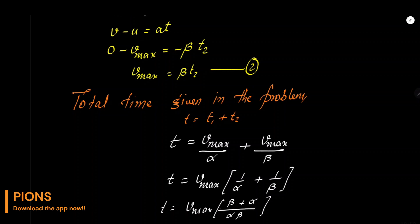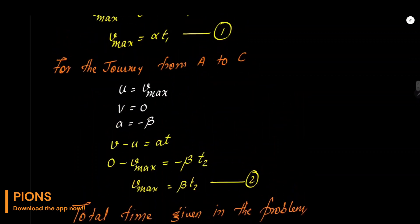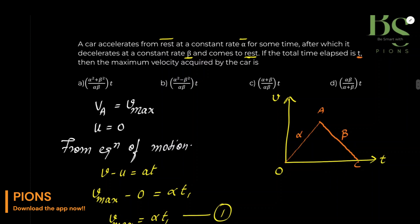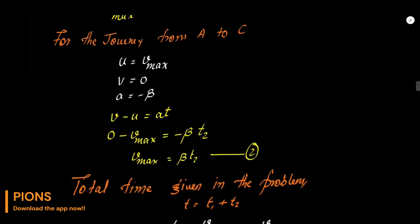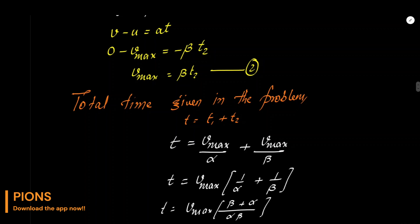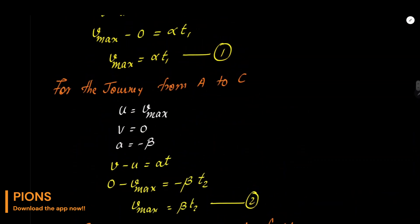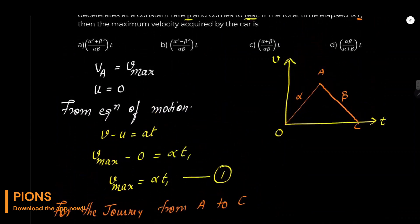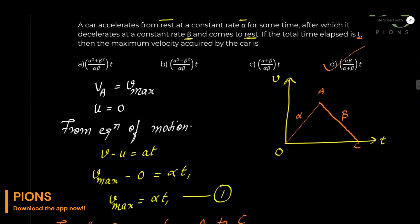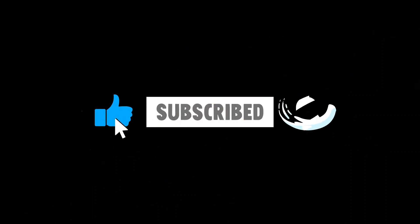अब cross multiply कर लेते हैं। v_max जो कि total maximum velocity है वह आ जाएगा: v_max = T · αβ / (α + β)। यही हमारा answer है — maximum velocity = T·αβ/(α+β) — option D।